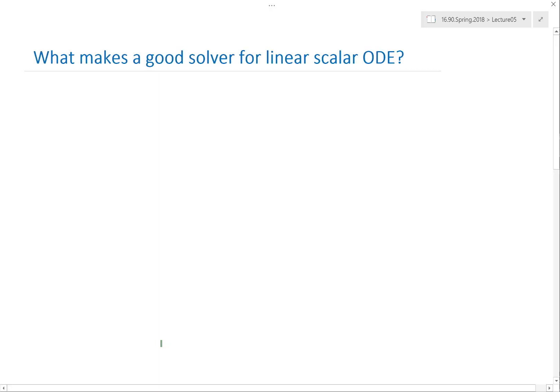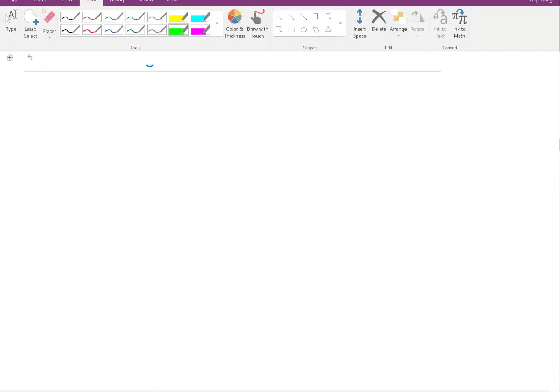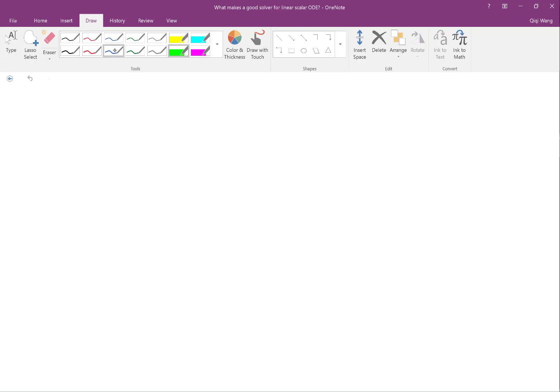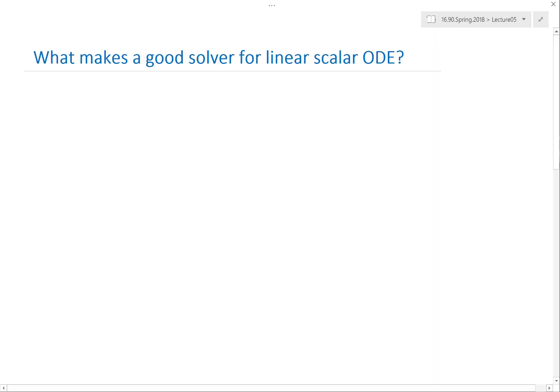So we can do the same thing for a slightly more complex scheme. That's the midpoint rule. So the midpoint rule, u of n plus 1, let's make sure it's numerical, minus u of n minus 1 divided by 2 delta t equal to, let's say, scalar ODE, we have lambda times u hat of n.